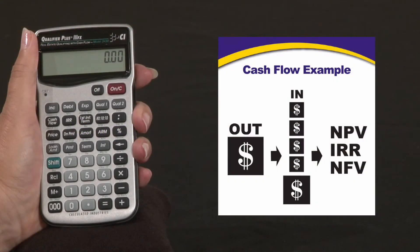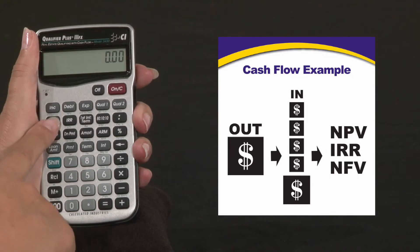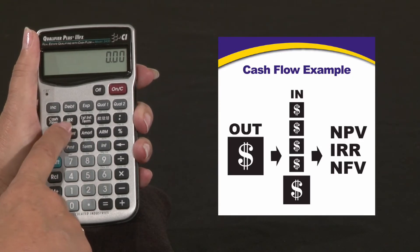The cash flow function is a great feature on the Qualifier Plus 3FX and desktop. You can enter your cash flow and then solve for your internal rate of return.